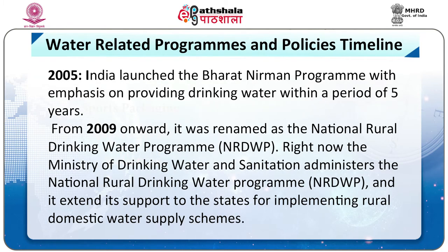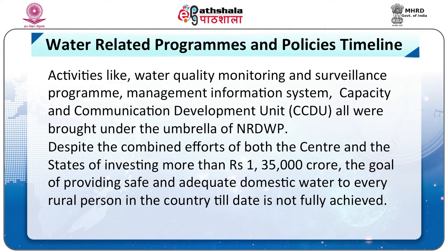In 2005, India launched the Bharat Nirman program with emphasis on providing drinking water within five years. From 2009 onwards, it was renamed the National Rural Drinking Water Program. The Ministry of Drinking Water and Sanitation administers this program and extends support to states for implementing rural domestic water supply schemes. Activities like water quality monitoring and surveillance, management information systems, and capacity and communication development were all brought under the umbrella of the National Rural Drinking Water Program.